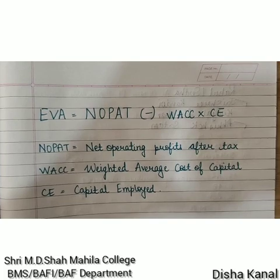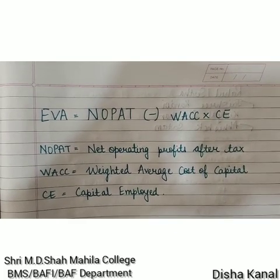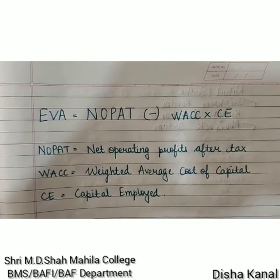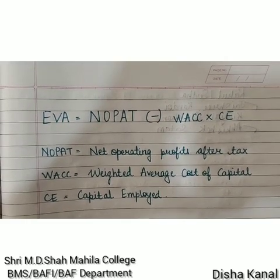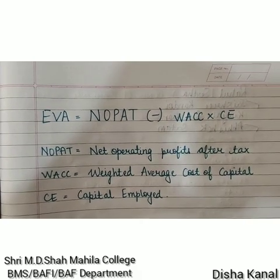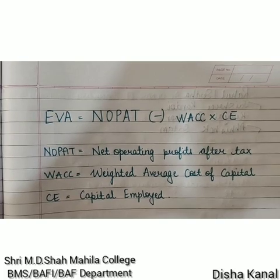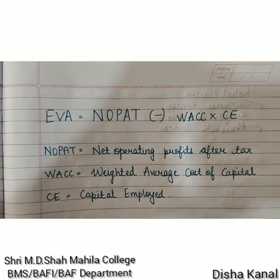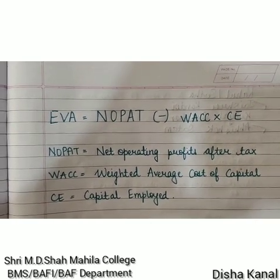Let us see why EVA is different from the normal calculation of return. The formula for EVA is: NOPAT less weighted average cost of capital multiplied by capital employed. NOPAT is the net operating profit after tax, WACC is the weighted average cost of capital, and CE is the capital employed in the business.